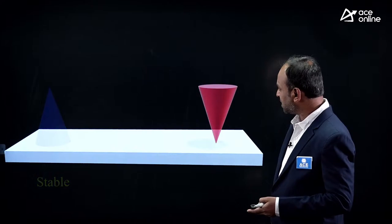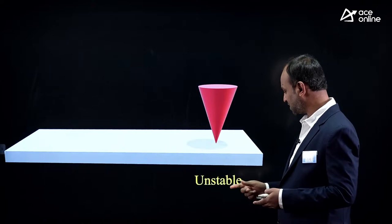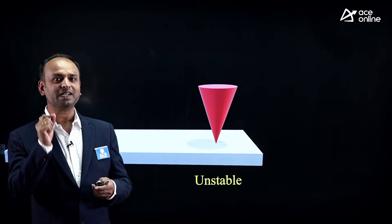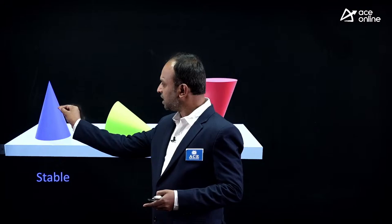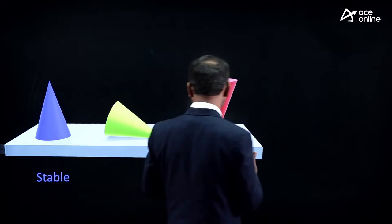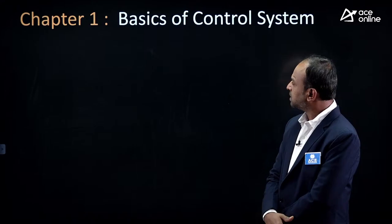To understand better: a stable system has no big change in output for small input. An unstable system — like a cone balanced on its tip — falls with any small disturbance. A marginal stable system is in between. These three definitions cover stability. The major purpose of control systems is to find stability.